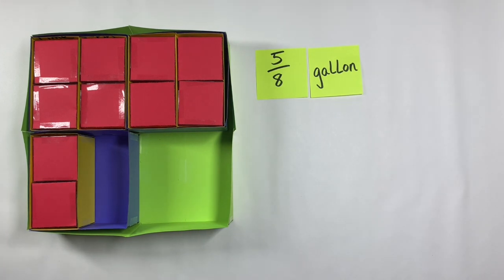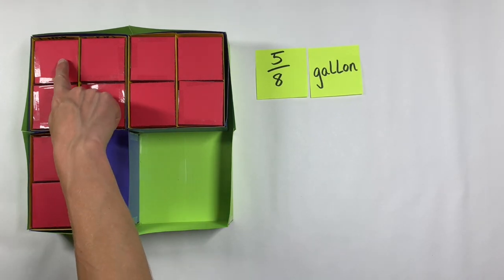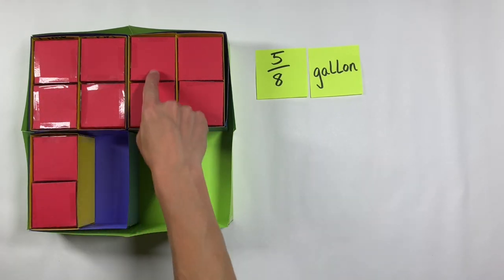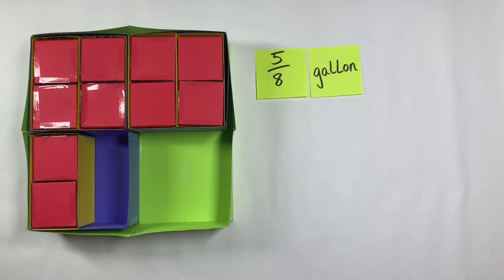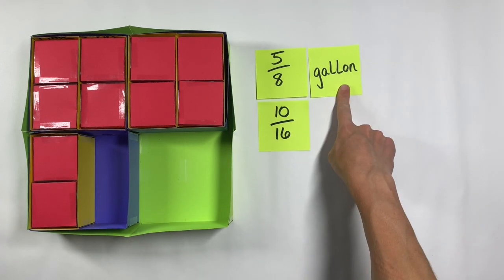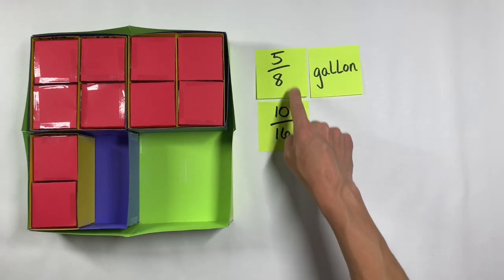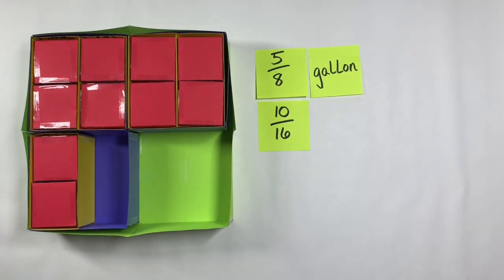Or if they choose to count by the cup size measures, they might say, well, we have 10 out of the 16 that we would need for a full gallon. So they might also call this 10 sixteenths of a gallon. We can use this as an opportunity to confirm that those are in fact equivalent fractions.